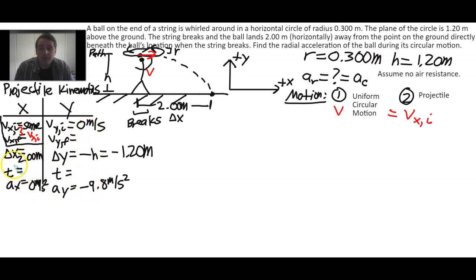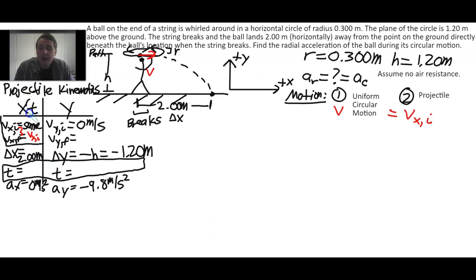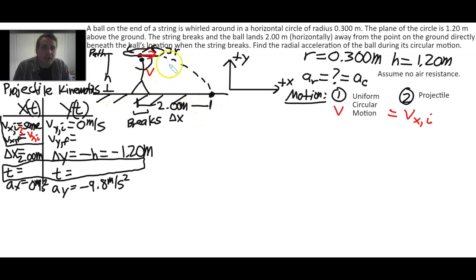One other key insight: we said the x initial velocity is the total initial velocity, so the y initial velocity must be 0. With kinematics you need three pieces of information to solve. We have that on the y side. Since we're looking for the x initial velocity and we have the displacement, we'll need the time, which comes from the y side — time is the same on both sides because x and y are both functions of time.